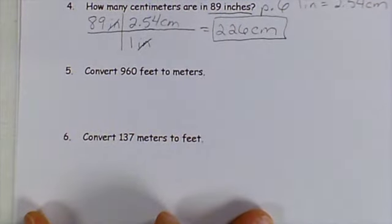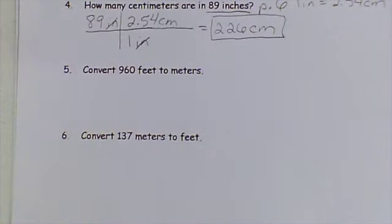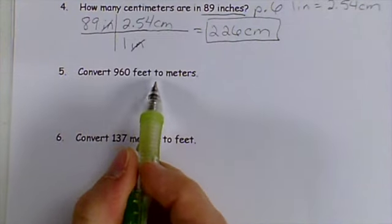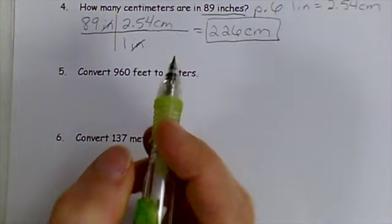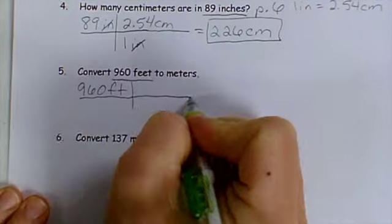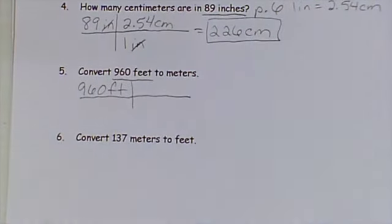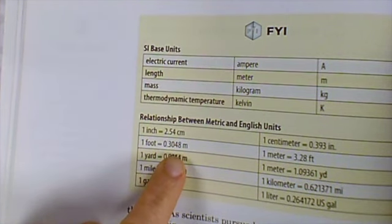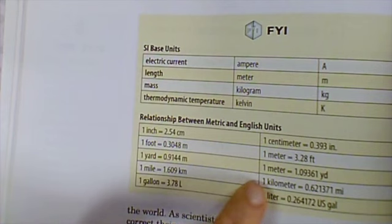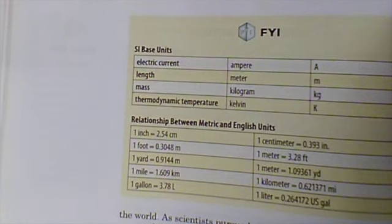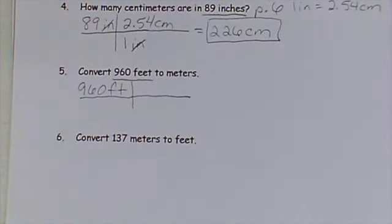Now these last two problems have a little bit more to do with your homework. I'm asked to convert 960 feet to meters. So I start out with my 960 feet. And I go to my book. And I see that one foot is 0.3048 meters, or one meter is 3.28 feet. I kind of like this one better, so I'm going to use that. You could use either, but I'm going to use one meter equals 3.28 feet.